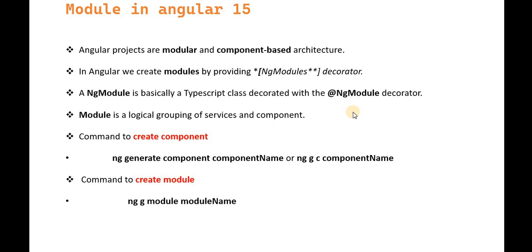If we talk about this module — when we create any project in Angular, the Angular project is a modular and component-based architecture. When we design a UI page, we have to create a component. A component is basically a combination of the HTML file, testing file, CSS file, and the component file. For giving the reference of this component, we have the module. That's why Angular projects follow modular and component-based architecture.